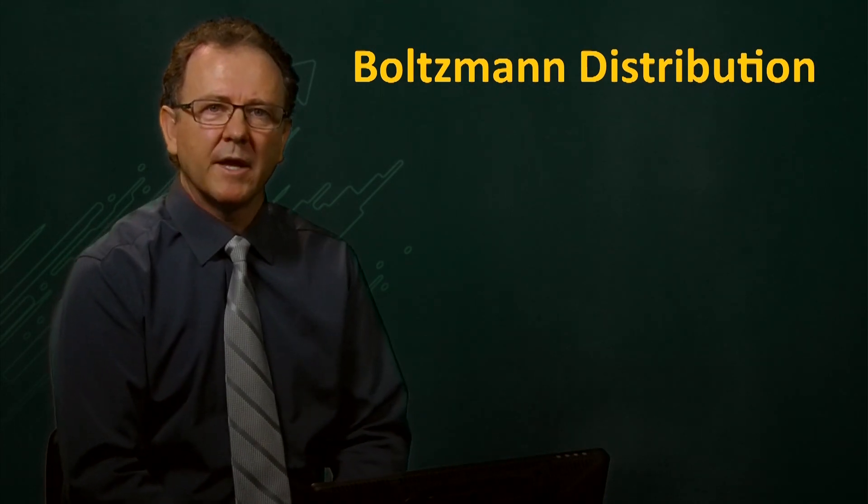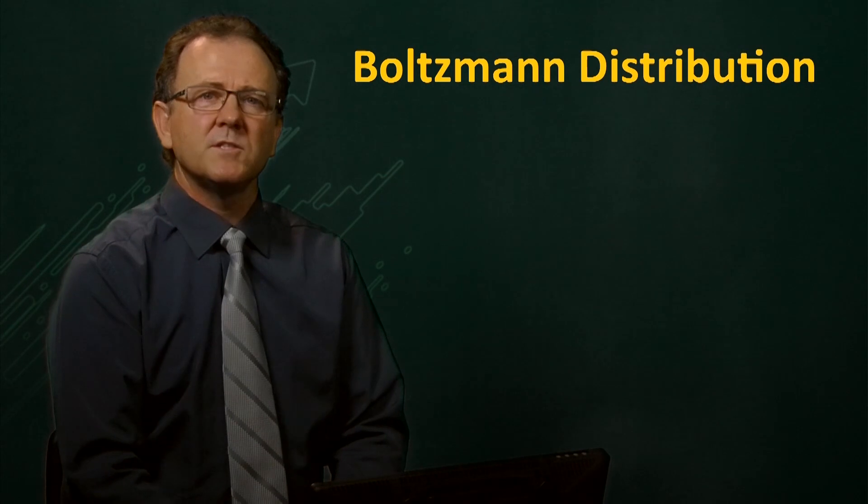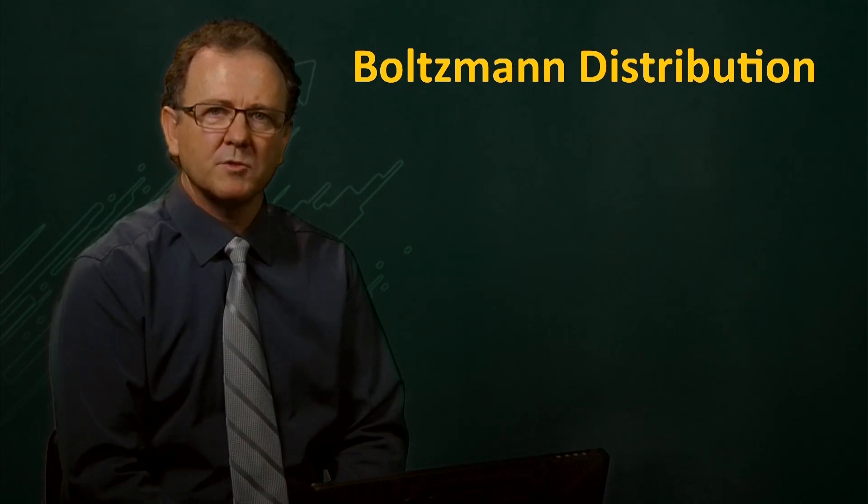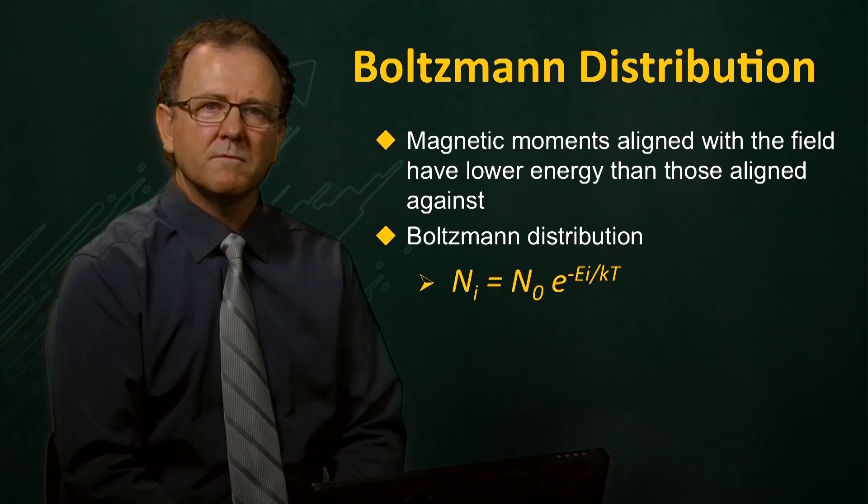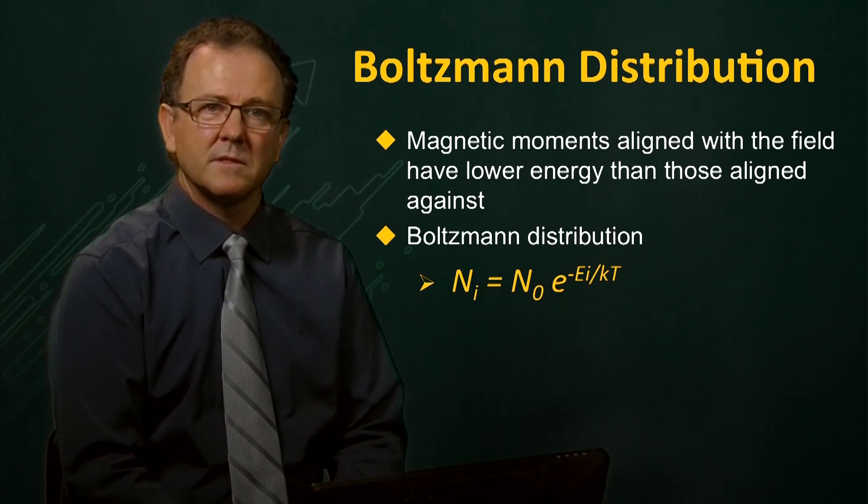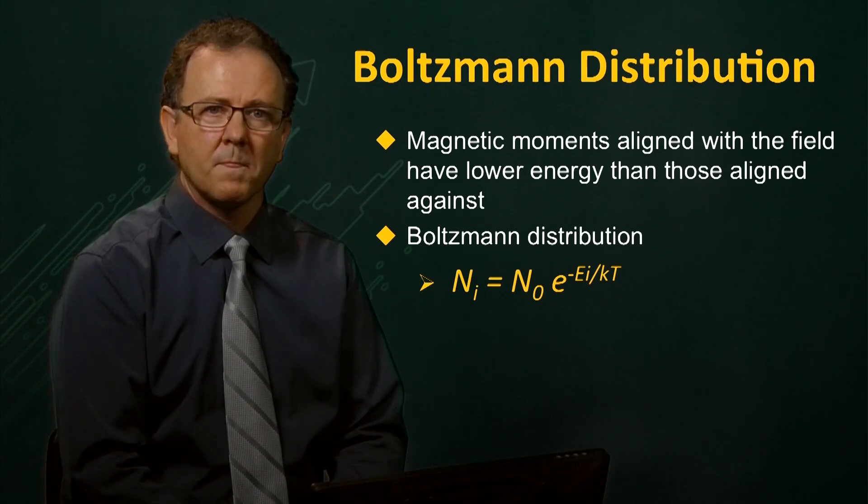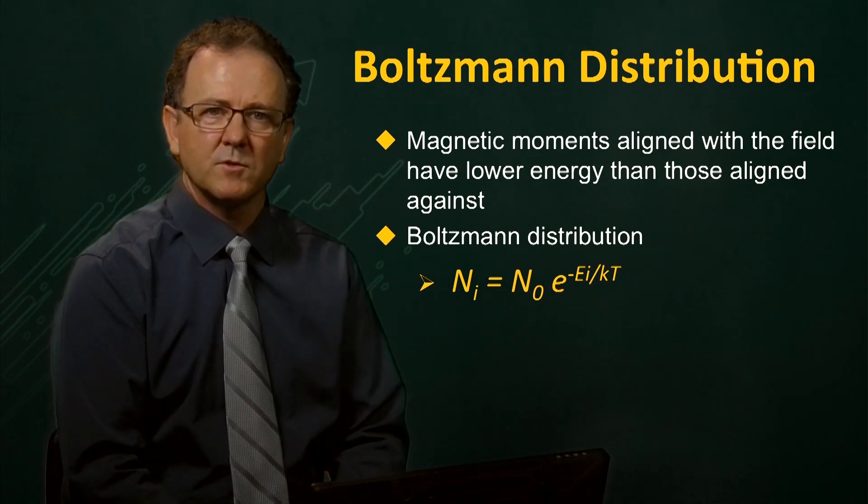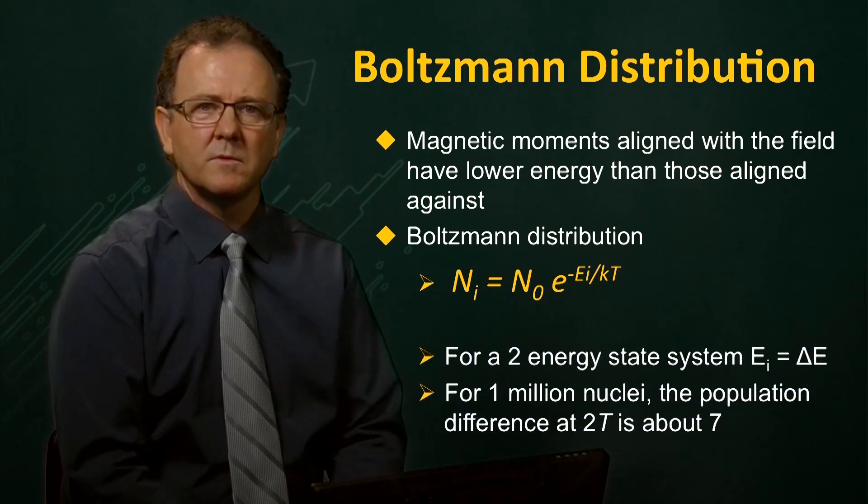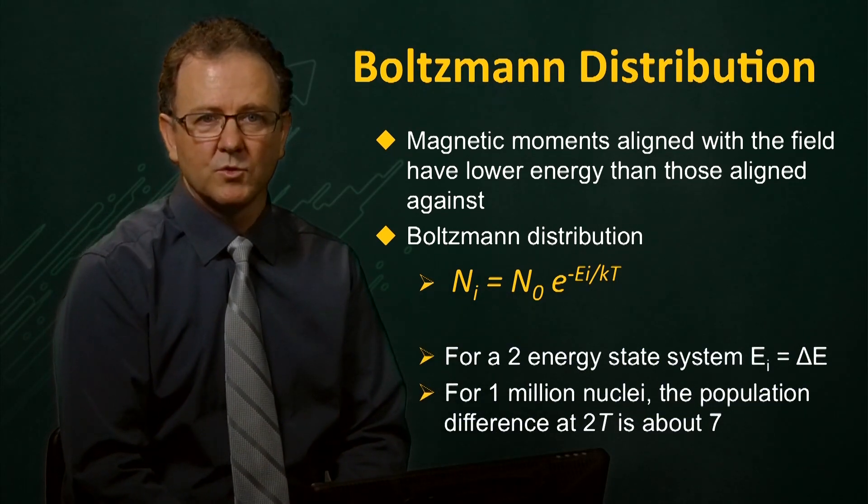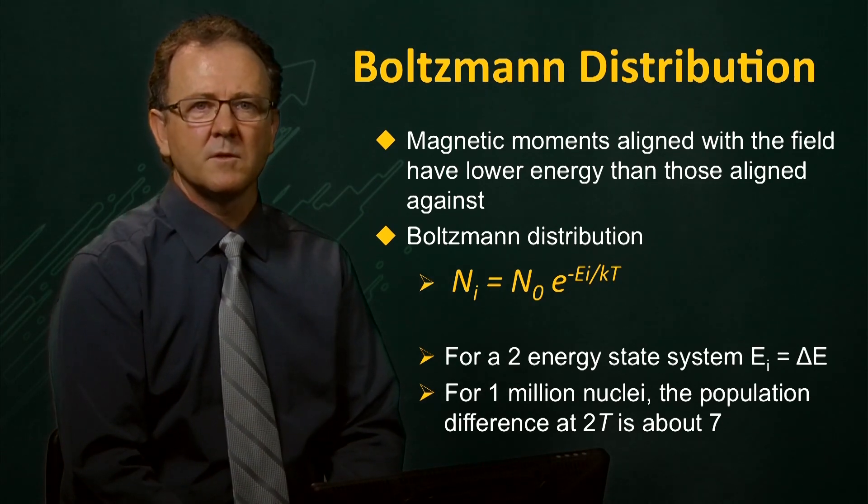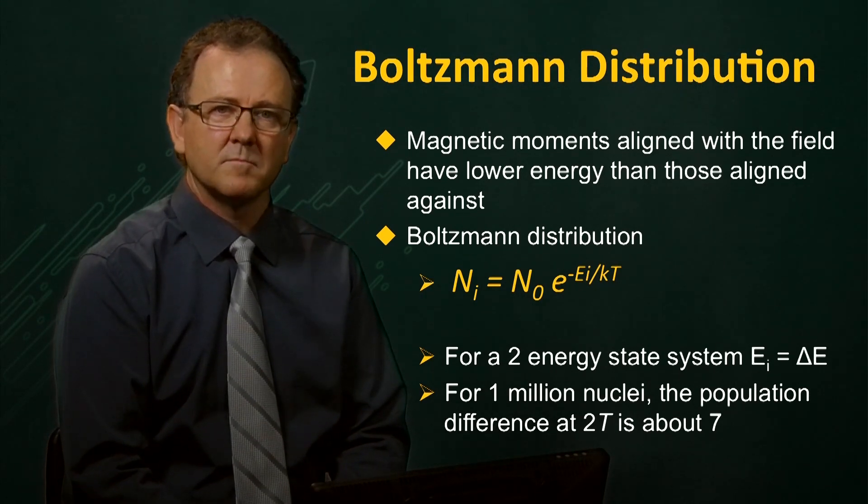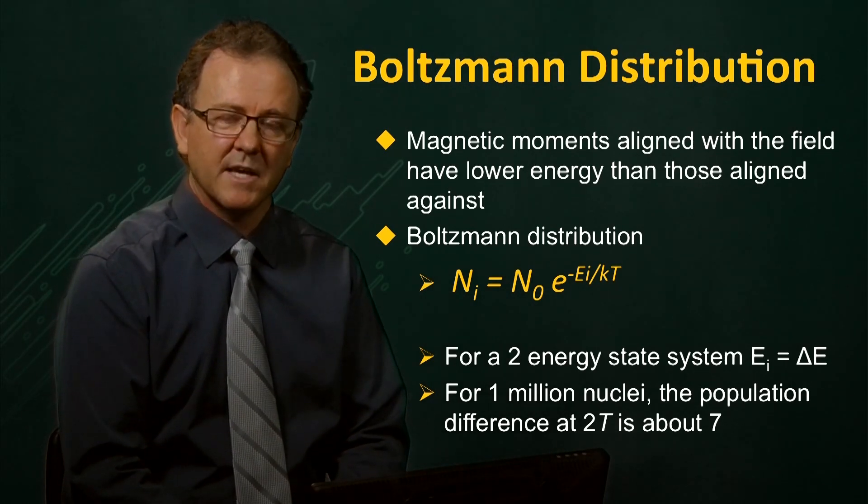So how many spins are there in the two energy levels at any one time? This is determined by the energy difference between the levels and the temperature of the system and is governed by the Boltzmann distribution, which relates the number of spins in a level to the total spins, the energy of that level and the temperature. We can use this relationship to calculate the spin population difference between the levels at a particular field strength and temperature. For example, for a sample of one million spins in a field of two Tesla and at 25 degrees Celsius, we can show that the excess number of spins in the low energy level is only seven. This is an indication that MRI is a relatively insensitive scanning method.